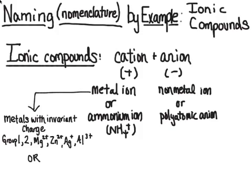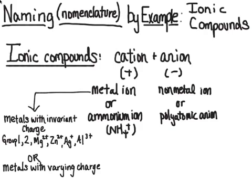Group one are the alkali metals — they have a plus one charge. Group two are the alkaline earth metals — those have a plus two charge. Many other metals have varying charge; these are transition metals and post-transition metals that can have multiple charges.